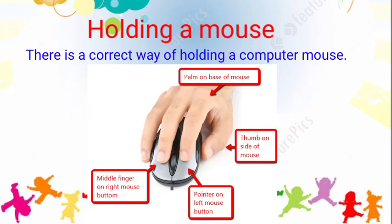Holding a mouse. There is a correct way of holding a computer mouse. Your middle finger should be on the right mouse button, your pointer finger on the left mouse button, your thumb on the side of the mouse, and your palm on the base of the mouse.